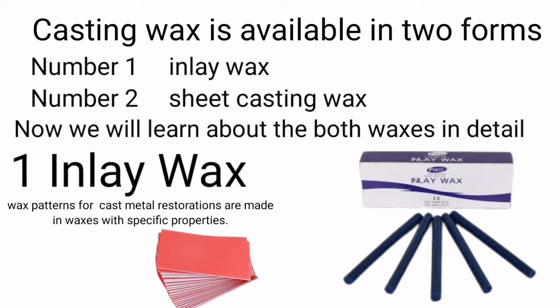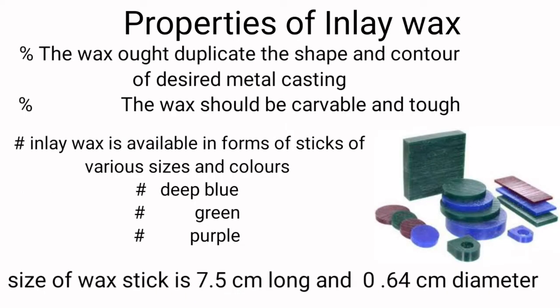Number one: inlay wax. Wax patterns of cast metal restorations are made in waxes with specific properties. The wax should duplicate the shape and contour of the desired metal casting. The wax should be carvable and tough. Inlay wax is available in the form of sticks of various sizes and colors — deep blue, green, purple. The wax stick is 7.5 centimeters long and 0.64 centimeters in diameter.